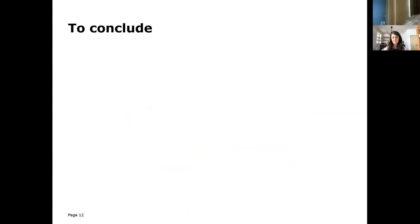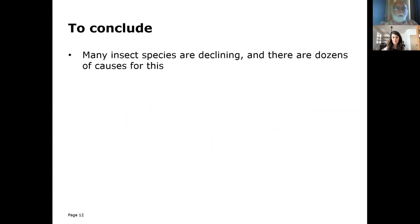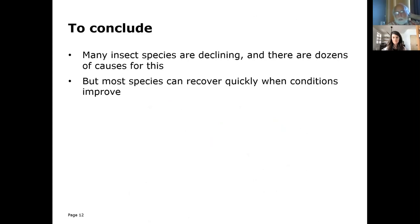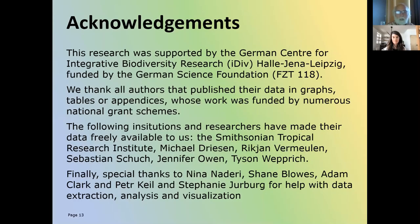To conclude with a few take-home messages: yes, many insect species are declining, and there are many causes for this. But if you improve the conditions at the location where insects are living, they can recover quite rapidly. And we know almost nothing about most of the insect species on Earth. With that, I want to acknowledge our funding and all the people who made data available to us.